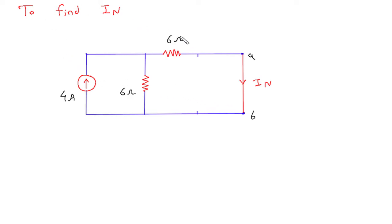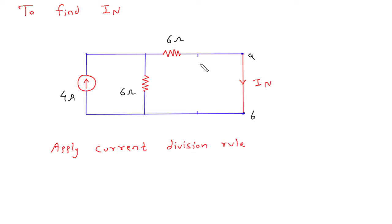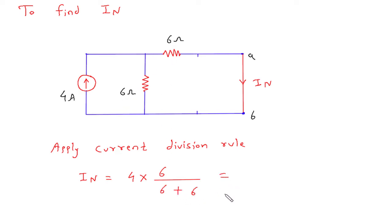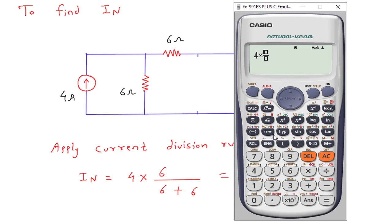Now we have to find current through this 6 ohm resistor, so this will be In. We will apply the current division rule. So we get In is equal to I through 6 ohm, which equals the opposite branch resistance 4 into 6 divided by total resistance 6 plus 6, so it is 2 ampere.